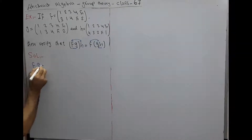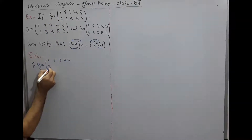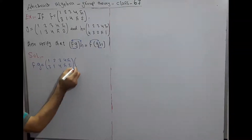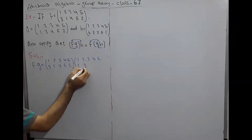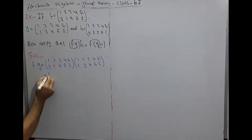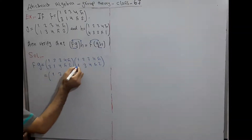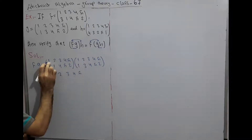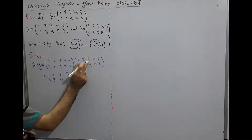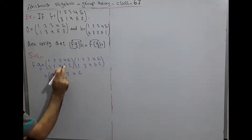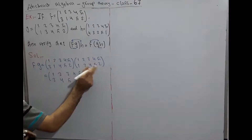First, f∘g equals f — (1 2 3 4 5 / 3 1 4 5 2) — into g — (1 2 3 4 5 / 1 3 4 5 2). Image of 1 under f is 3, image of 3 under g is 4. Image of 2 under f is 1, image of 1 under g is 1. Image of 3 under f is 4, image of 4 under g is 5. Image of 4 under f is 5, image of 5 under g is 2. Image of 5 under f is 2, image of 2 under g is 3. So f∘g = (1 2 3 4 5 / 3 4 5 2 1).